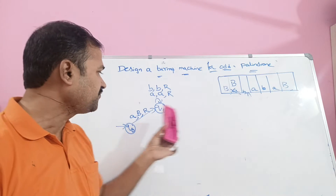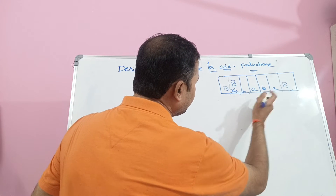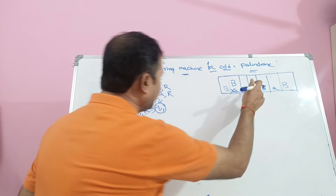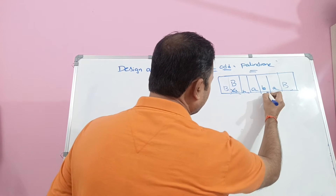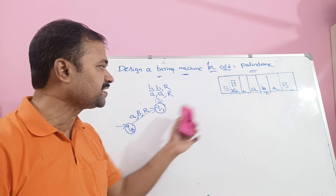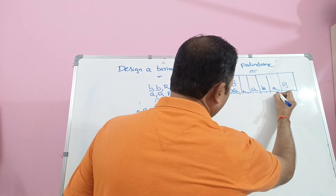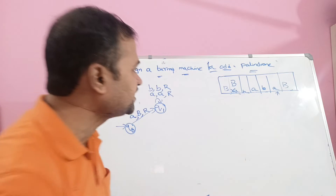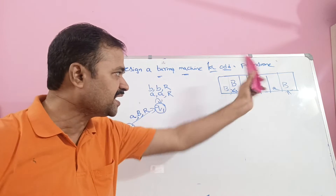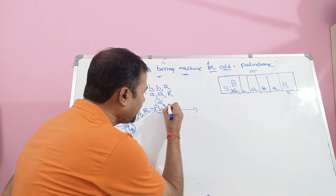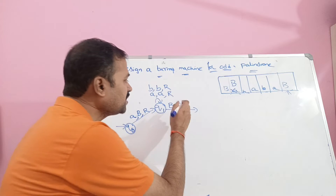We continue at Q1: if we read B, keep B the same but move the head right. If we read A, keep A the same and move the head right. We proceed until we reach the blank symbol. Once we apply the blank symbol on Q1, keep the blank symbol as it is but move the head one position to the left.